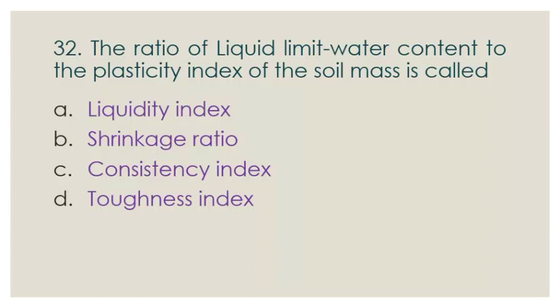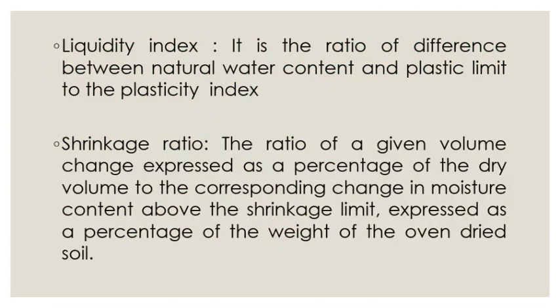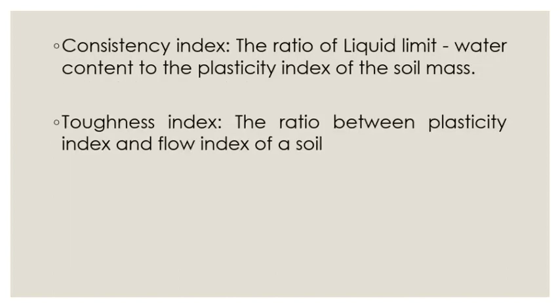Let's discuss the options. Liquidity index is the ratio of the difference between natural water content and plastic limit to the plasticity index. Shrinkage ratio is the ratio of a given volume change expressed as a percentage of dry volume to the corresponding change in moisture content above the shrinkage limit, expressed as a percentage of the weight of oven-dry soil.